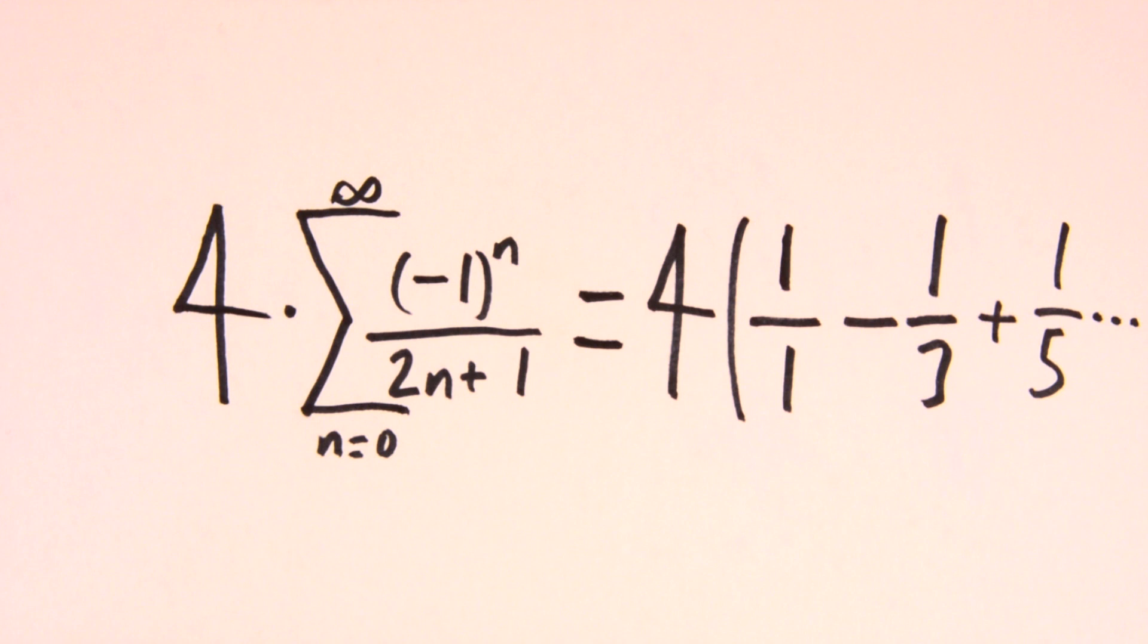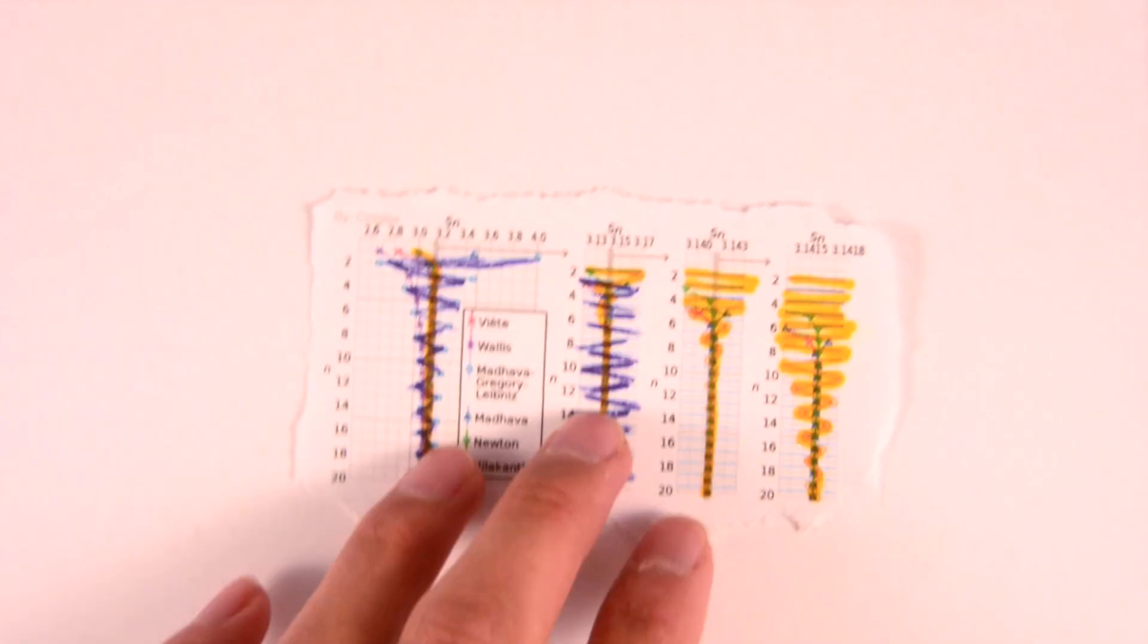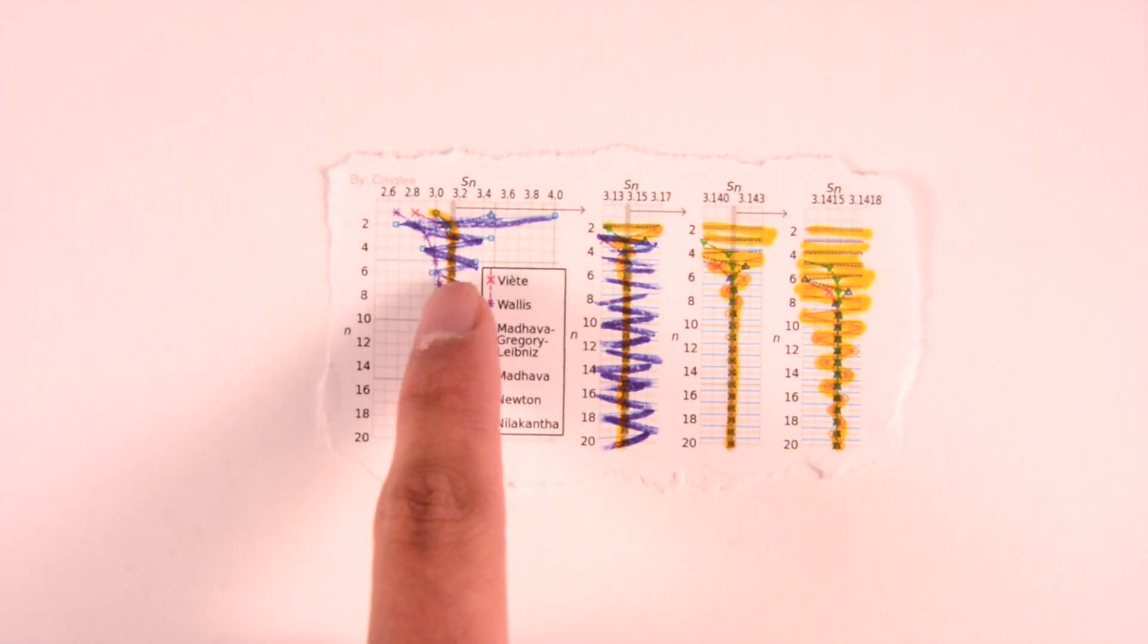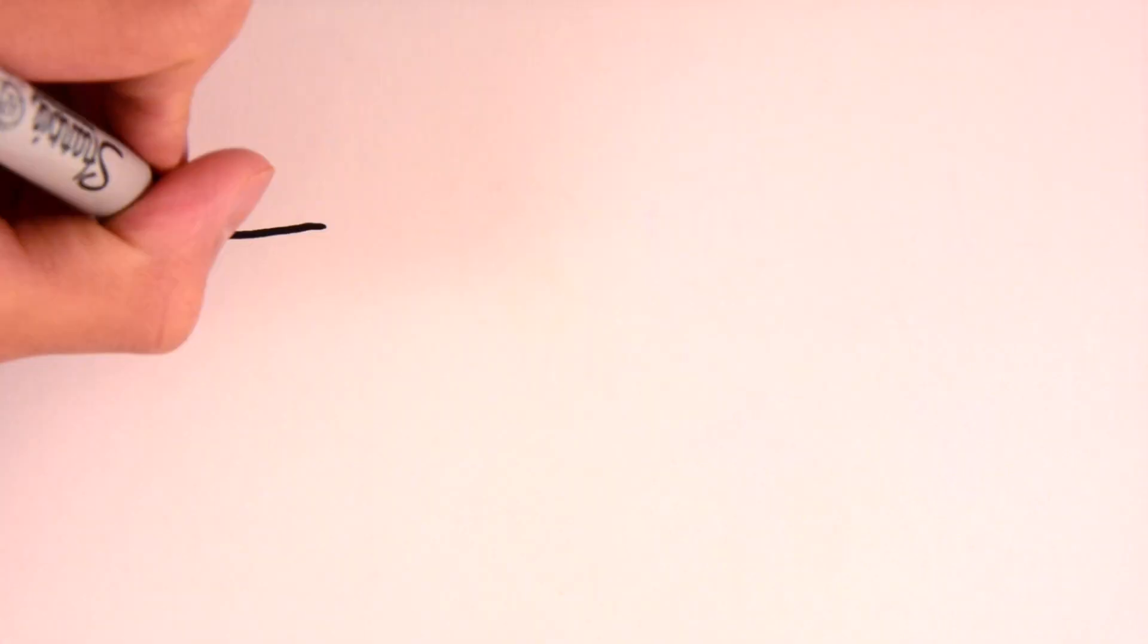But Neelakontha took it one step further and decided to correct the values of the series term by term, making the series converge to pi much faster than Leibniz's. And his corrections gave us this simple formula for pi.